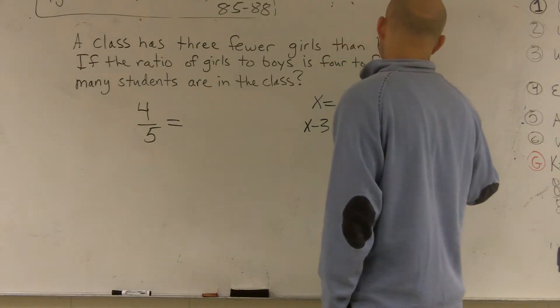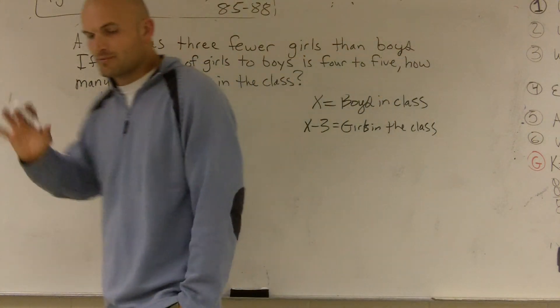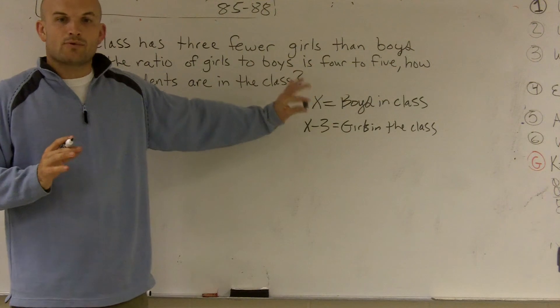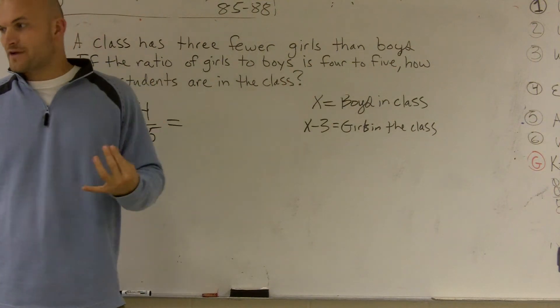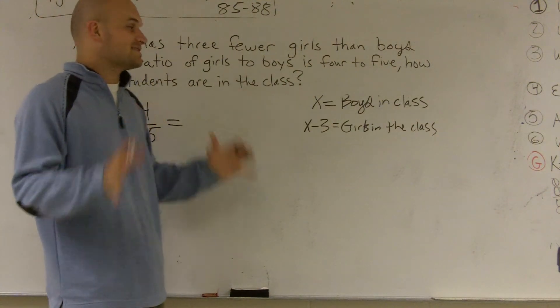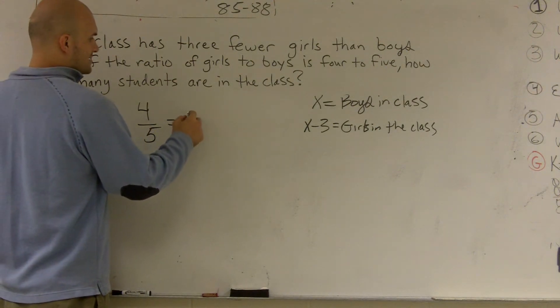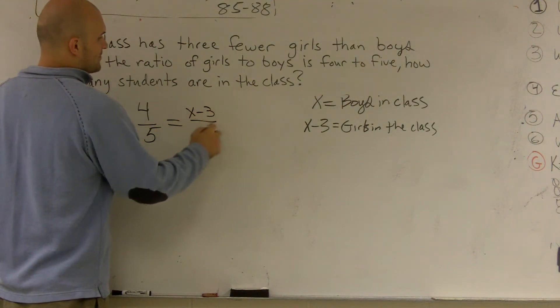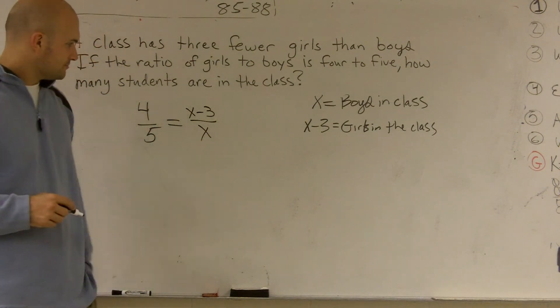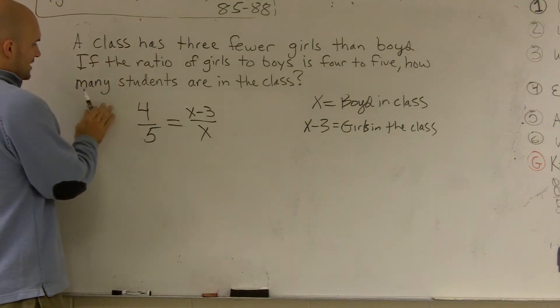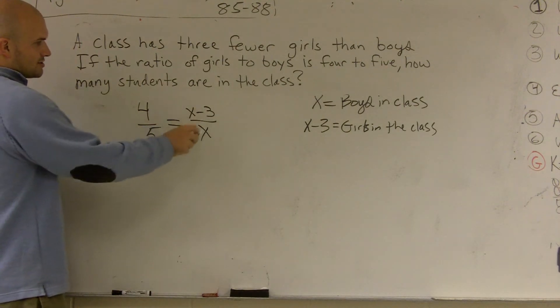Now, this is very important for you to understand. Whenever you're given a variable, make sure you tell everybody what your variable is. You've got to define your variable. And I'll show you right in this problem why that's so important. So here, we have x boys in class. So I can write now, I can say x minus 3 over x, girls to boys. So x minus 3 is your girls over boys. Again, if you look at the ratio, girls to boys, girls to boys.